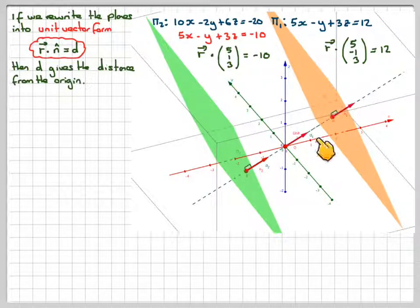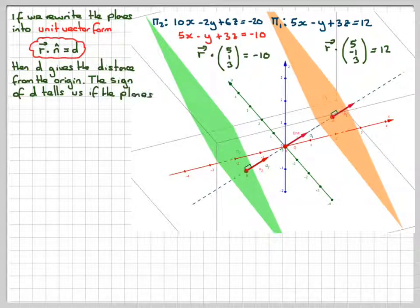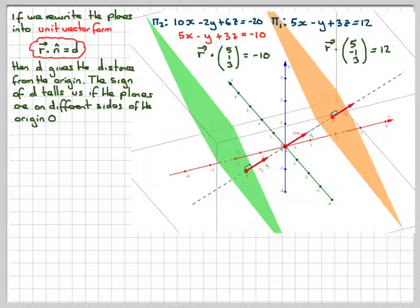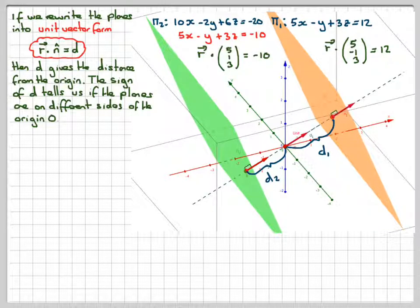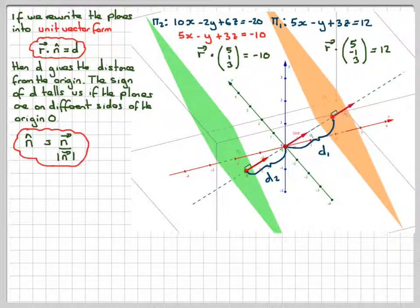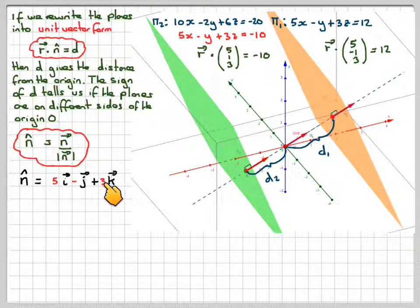The signs of d tell us which side of the origin each plane is on. If the signs are different, the planes are on different sides of the origin. We'll call the positive one D1 and the negative one D2. First we find the unit normal vector: the vector (5i − j + 3k) divided by its magnitude.